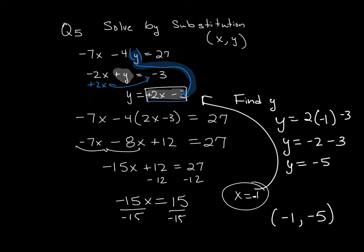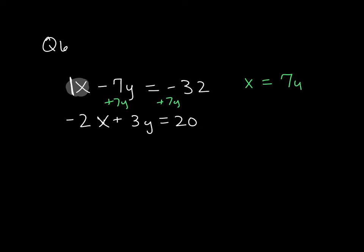I'm going to do one more question because question 6 is pretty much the same, but the values just look a little different. That one's x - 7y = -32, and the second equation is -2x + 3y = 20. Now, with this one, I want to focus on getting x all by itself because I'm looking for the variable that has a coefficient of 1. So I'm going to add my 7y to both sides, and by doing that, I get x = 7y - 32.